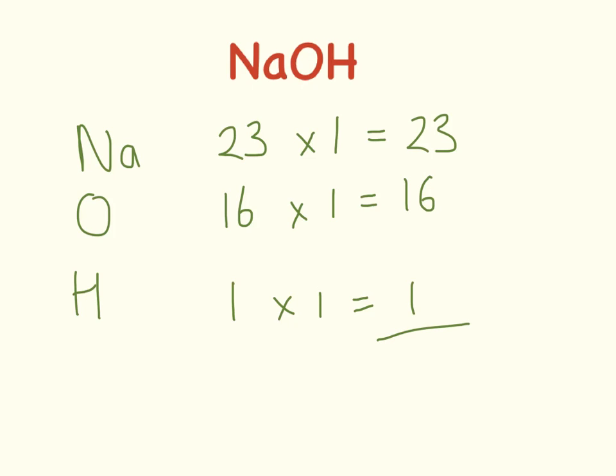We need to add all those numbers together. So 23 plus 16 plus 1 equals 40. So the relative mass of sodium hydroxide, you don't need to worry about what the names are for these, is 40.